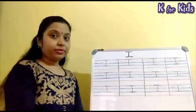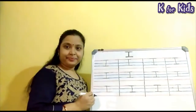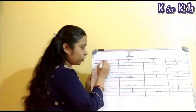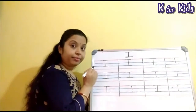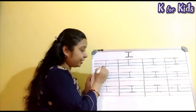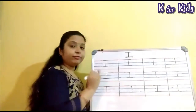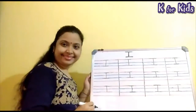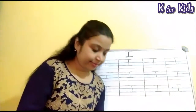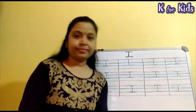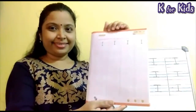Yes. Very good. First make a standing line, and then at the top of the standing line make a sleeping line, and then make another sleeping line at the bottom of the standing line. Write the alphabet I. Is it clear to you, children? Complete this page — page number 14.